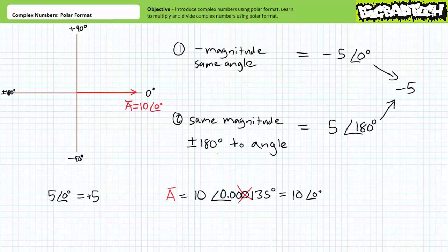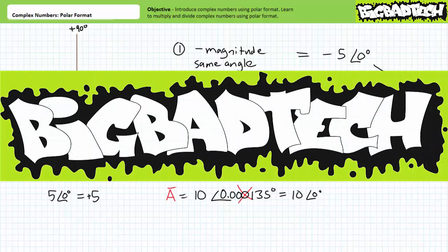That's about enough for today. We'll examine converting between rectangular and polar format, more math functions with complex numbers, and the use of scientific calculators in later lectures. In conclusion, this lecture presented complex numbers expressed using polar format, including both a magnitude and direction. Positive rotation is defined as counterclockwise and negative rotation as clockwise. We also learned to multiply and divide complex numbers in polar format. Remember to review this material as often as needed. Thank you very much for your attention, and remember to tell your lab partner about this resource and check out the Big Bad Tech channel for additional resources and updates.